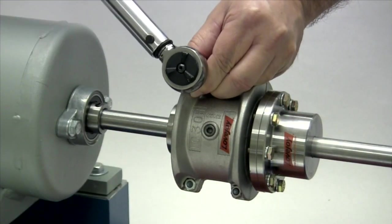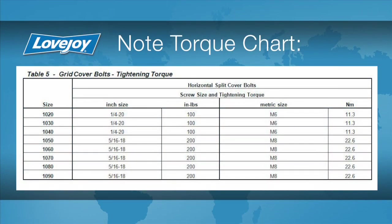Then with a torque wrench, tighten each fastener to the torque specified in the installation guide.